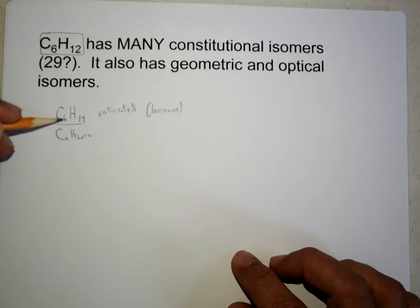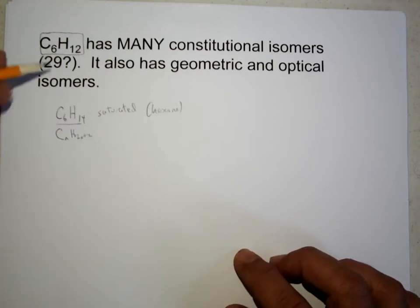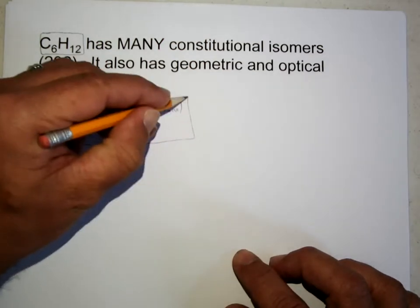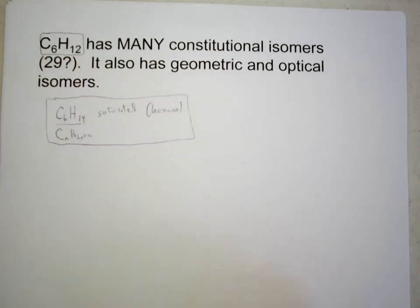If you have six carbons, n is 6, 2 times n is 12, plus 2 is 14. So CnH2n+2 gives us a reference hexane, C6H14. It's a simple alkane and there's a good five isomers of that.